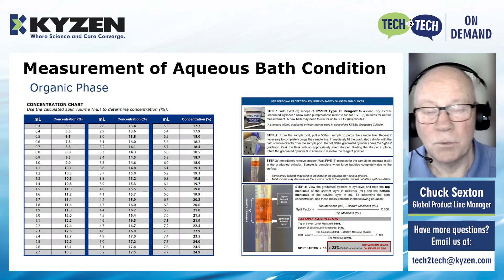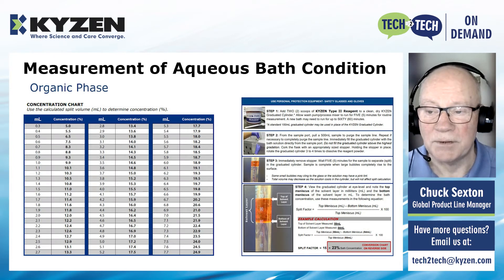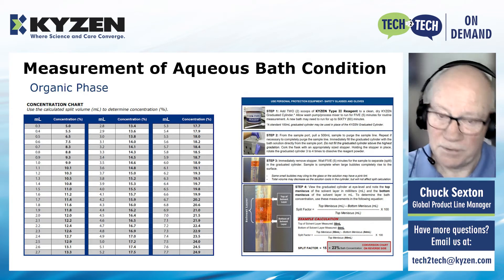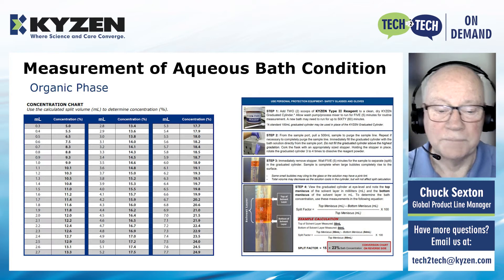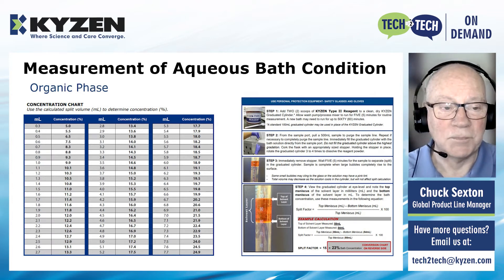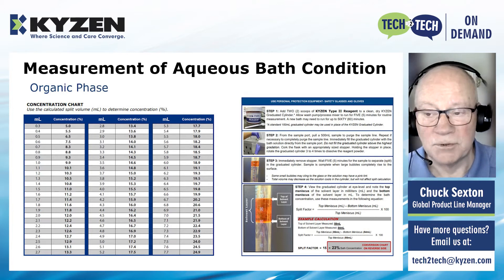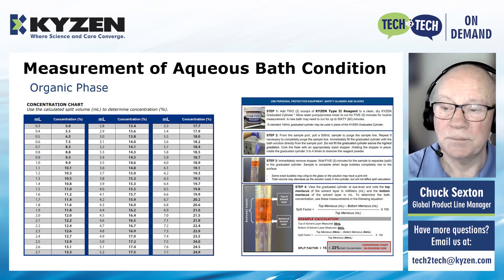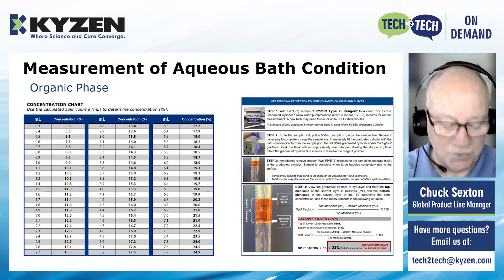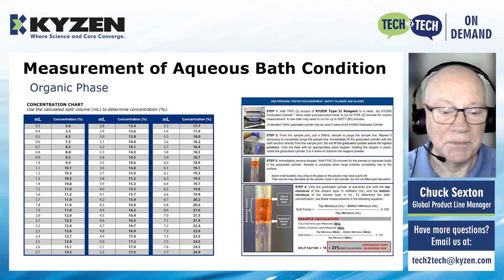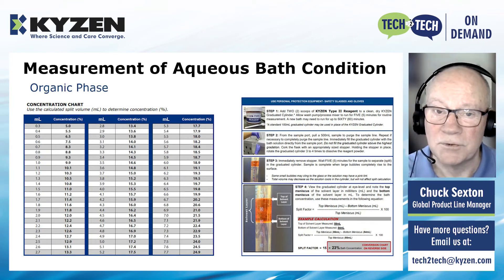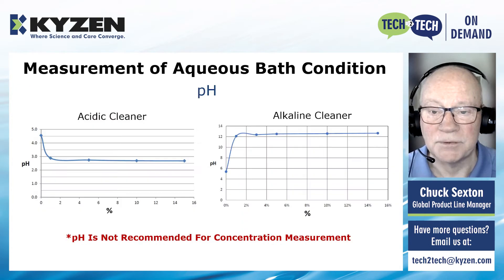Another method for measuring aqueous bath concentration is the organic phase method. Some products, especially in the electronics world, allow us to get a split of the organic phase by adding a reagent and measuring the amount of split. As you can see from the chart on the left, we relate that volume to the concentration of cleaning chemistry. It's very accurate and works for a great many products, and is not usually affected much by contaminants.